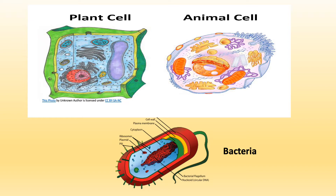Bacteria have DNA like plant and animal cells, and they have a cell membrane like plant and animal cells. However, they do not have a nucleus like plant and animal cells. We call the circular DNA found in bacteria the nucleoid. They do not have a nucleus.